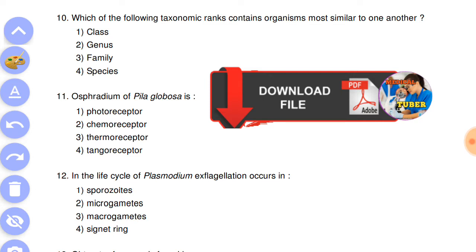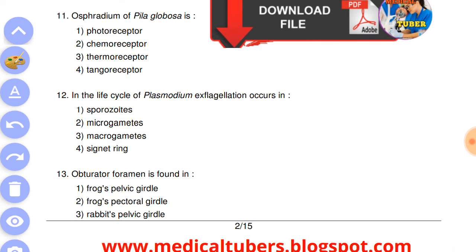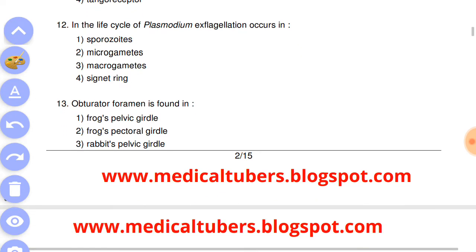Next question: osphradium of Pila globosa is answer is the second, chemoreceptor. Question number 12: in the life cycle of Plasmodium, exflagellation occurs in answer is the second, microgametes.